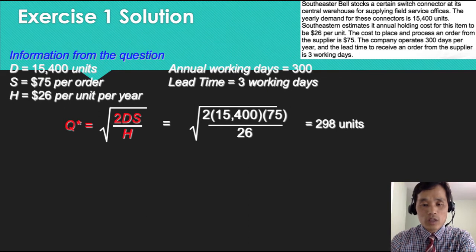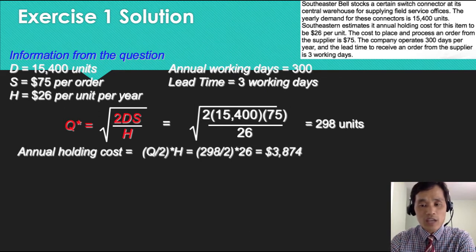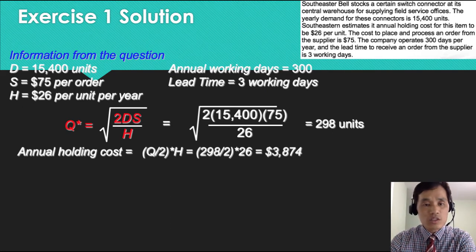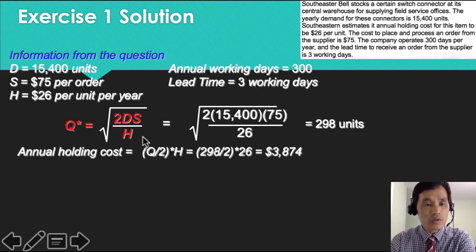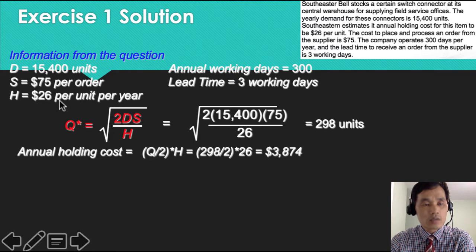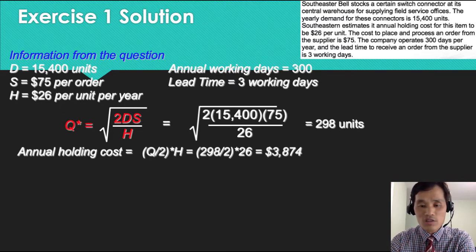Now you are able to calculate annual holding cost as well, which is 3874. How did I calculate that? The formula for annual holding cost is Q over 2 times H. So you just plug those numbers, Q 298 divided by 2 times H, $26 per unit per year. That's annual holding cost.